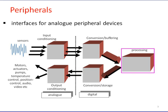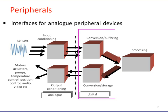RAM is used to store volatile data. Most of the time, embedded systems are controlling other systems which depend on the output from the embedded system. For such systems, digital to analog converters (DAC) are used.